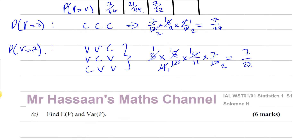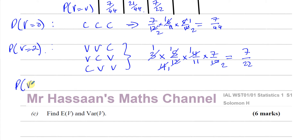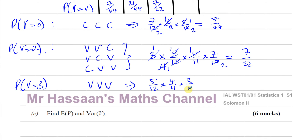For P(V=3), all three cards are vowels — the only arrangement is VVV. That gives 5/12 × 4/11 × 3/10. Cancelling: 4 and 12 give 3; 3 and 3 cancel; giving 1 on top. 5 and 10 give 2. So we get 1 over 22. P(V=3) = 1/22.